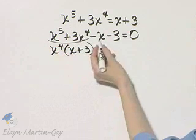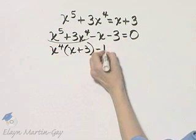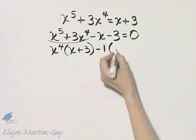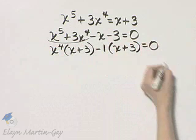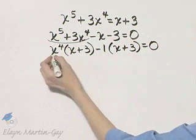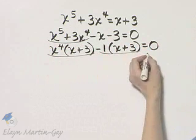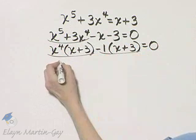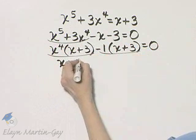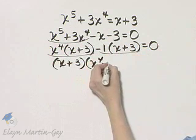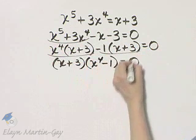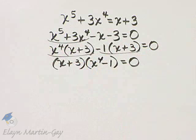Because of that x plus 3, I'll factor a negative 1 from these two terms, and I'll have x plus 3. Notice I haven't factored yet. There is a common factor here of x plus 3, and when I factor out the x plus 3, I have x to the fourth minus 1. Have I factored completely on the left side?